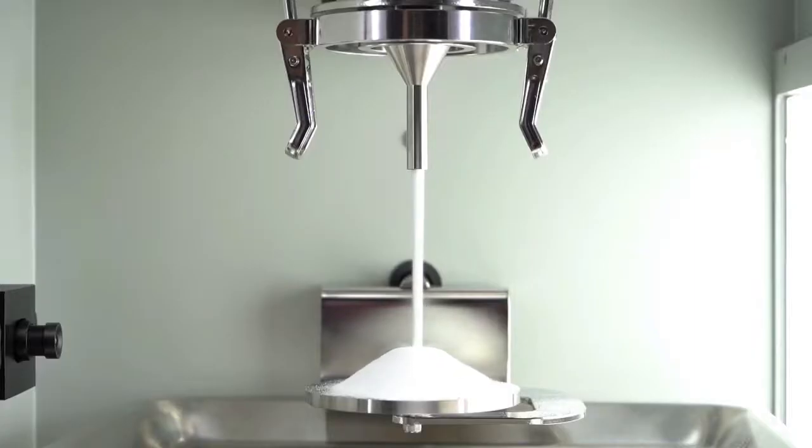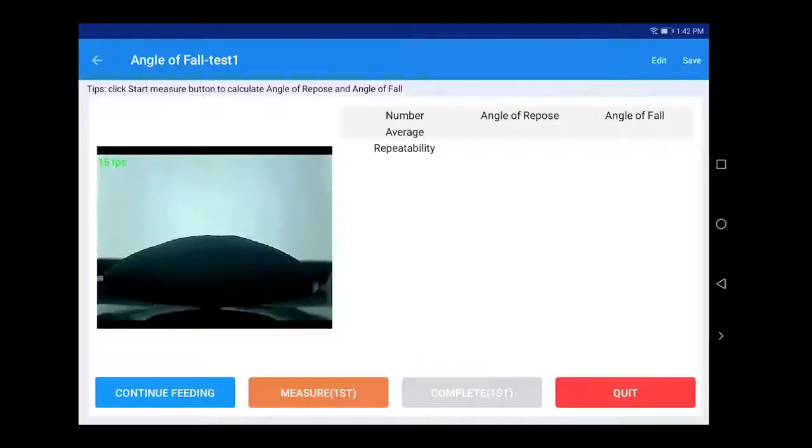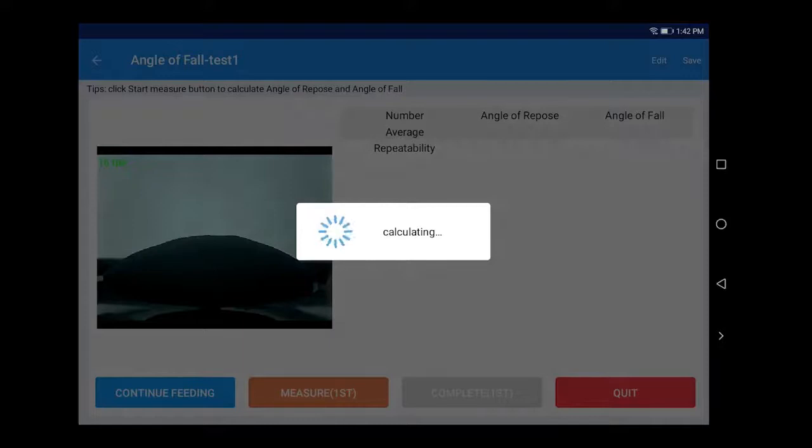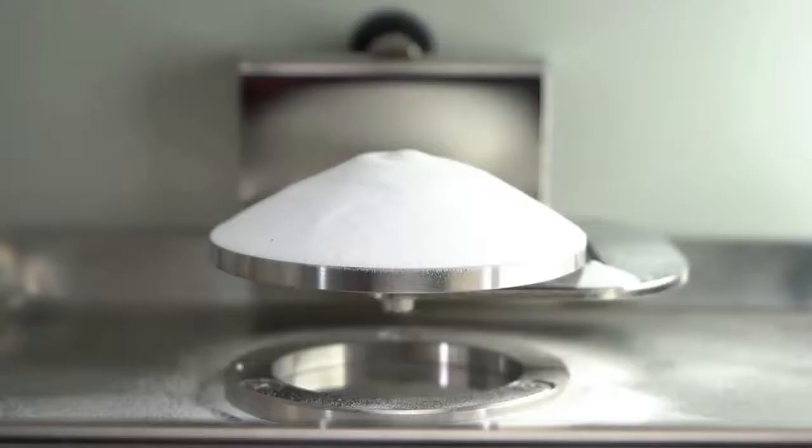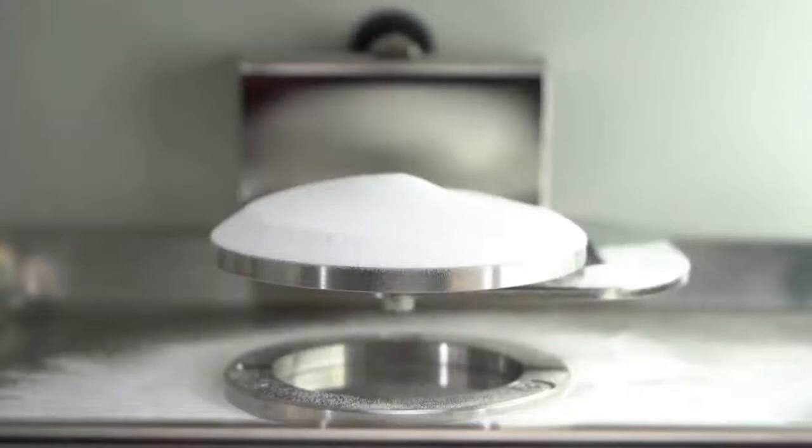Stop feeding when a symmetrical sample powder cone is formed on the angle of repose platform and there is powder falling around the platform. Click Measure first to end the electromagnetic vibration. The system will automatically shoot an image and calculate the angle of repose and the angle of fall.